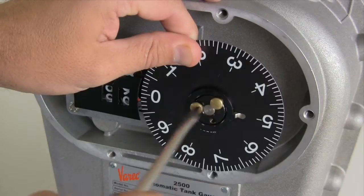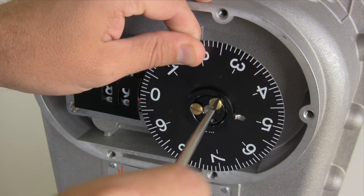First, remove one brass screw, loosen the other two, and remove the retaining ring and dial.